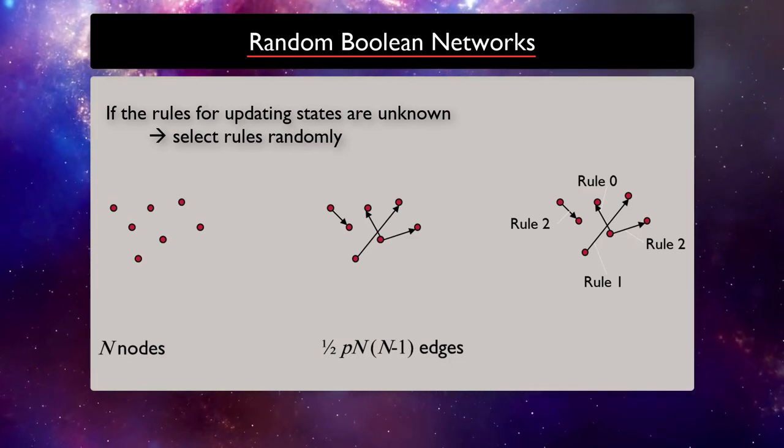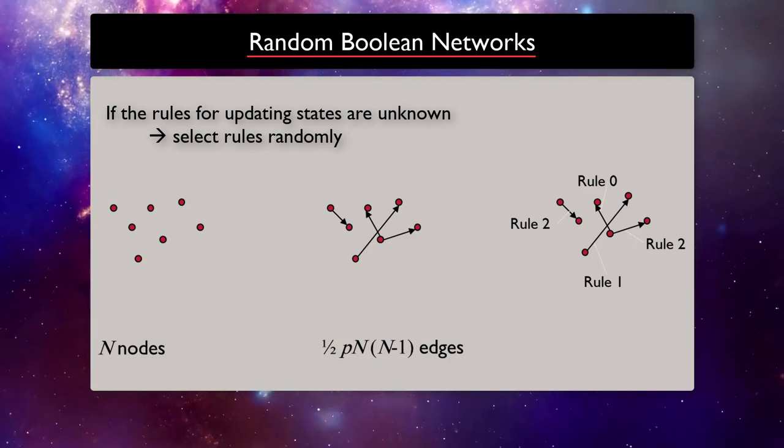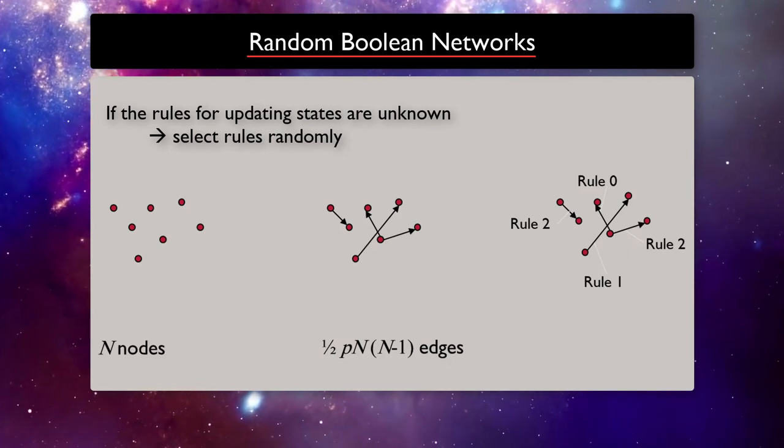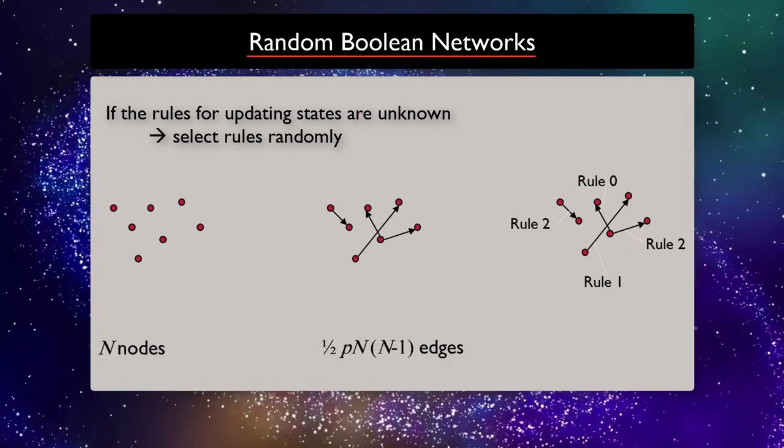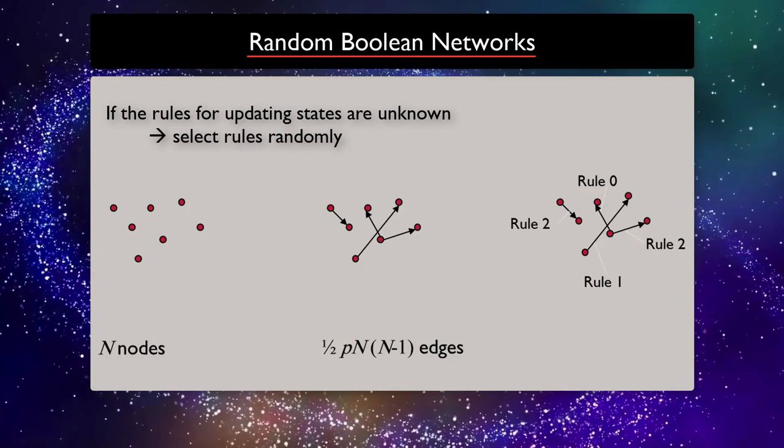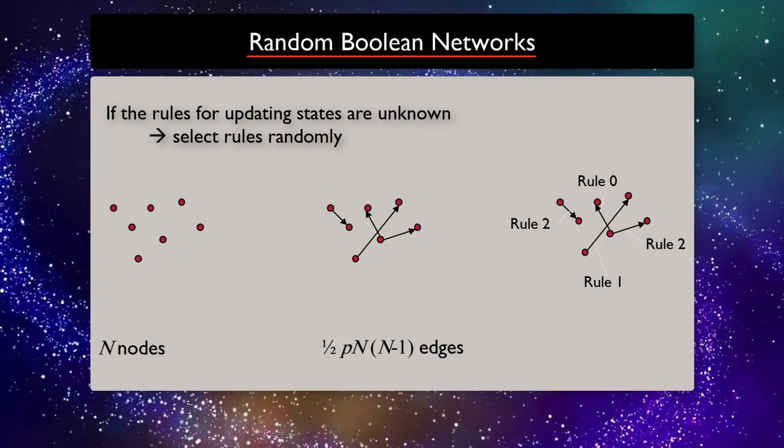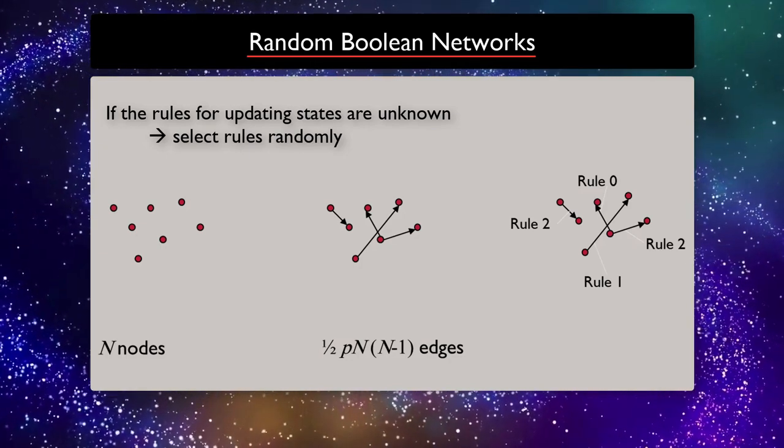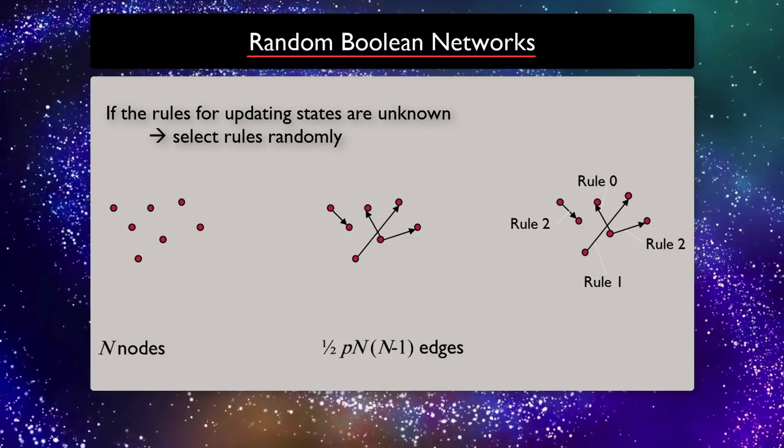Suppose that the boolean functions are assigned to a random boolean network's vertices so that they evaluate to 0 with probability p and evaluate to 1 with probability 1-p.